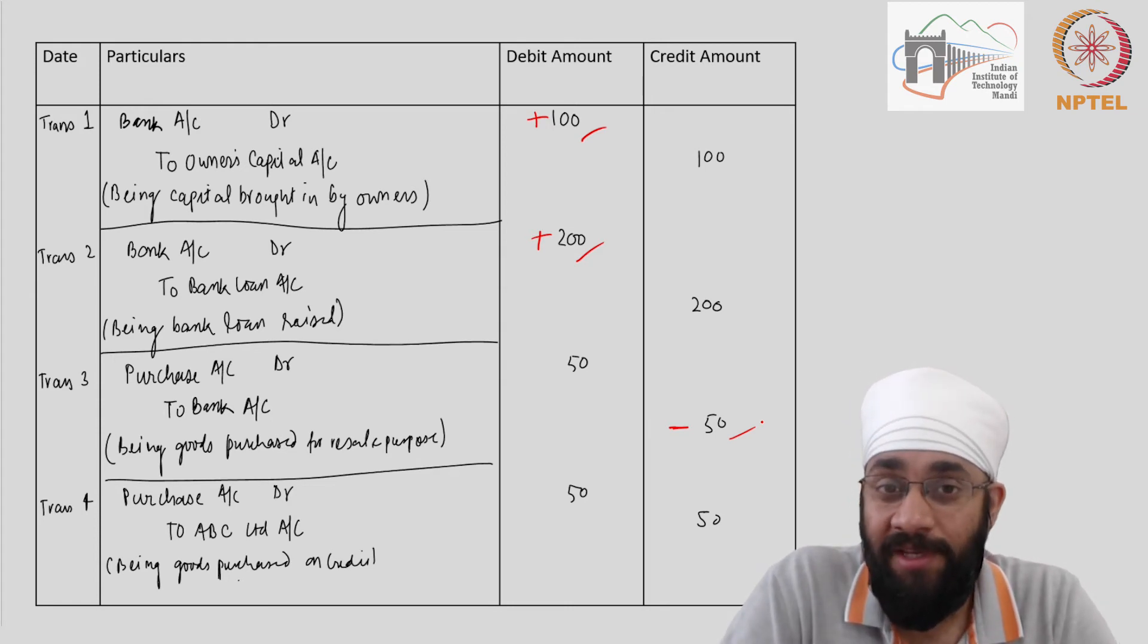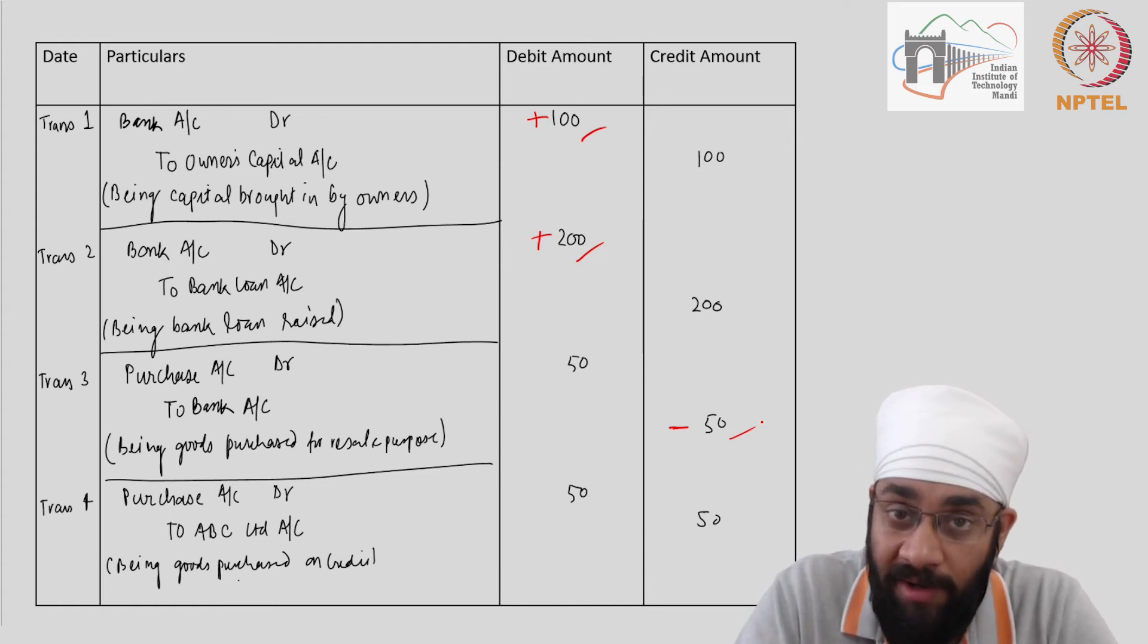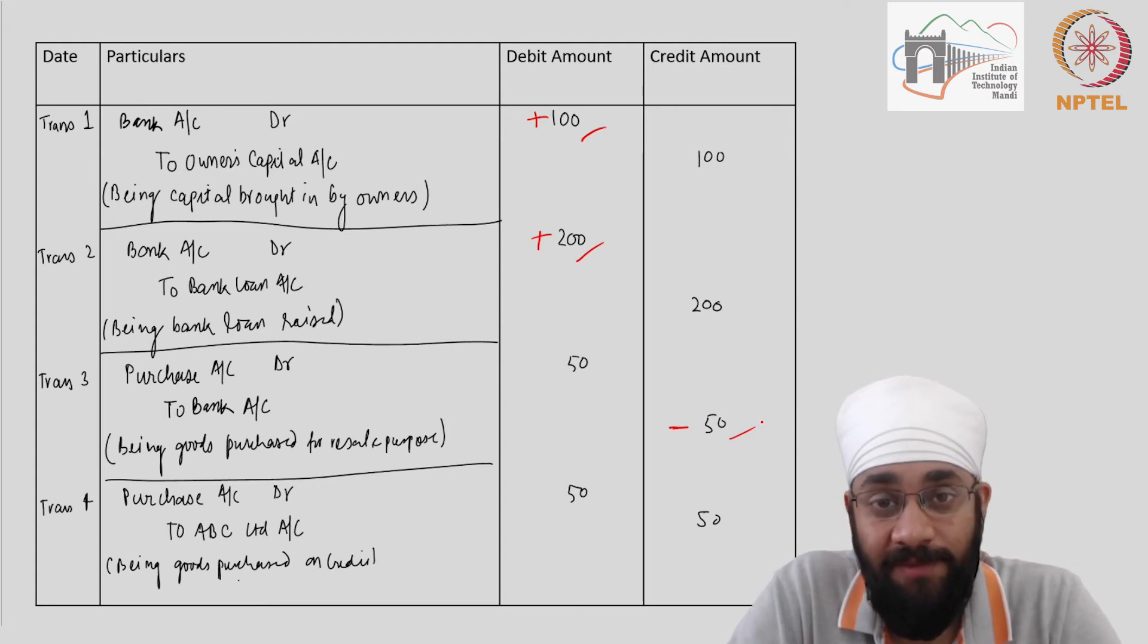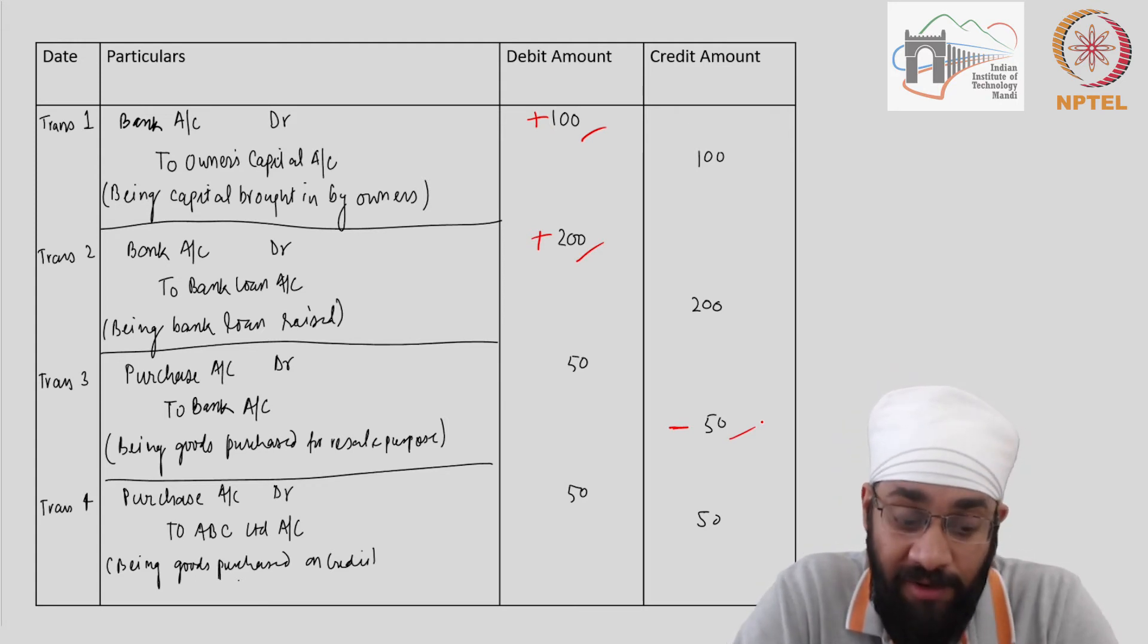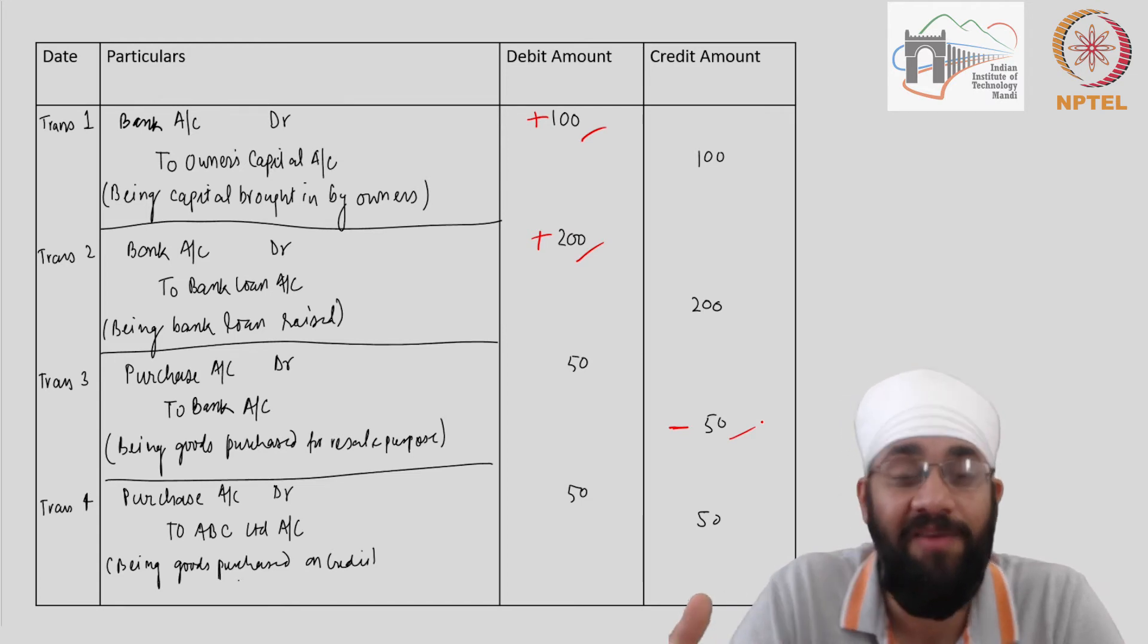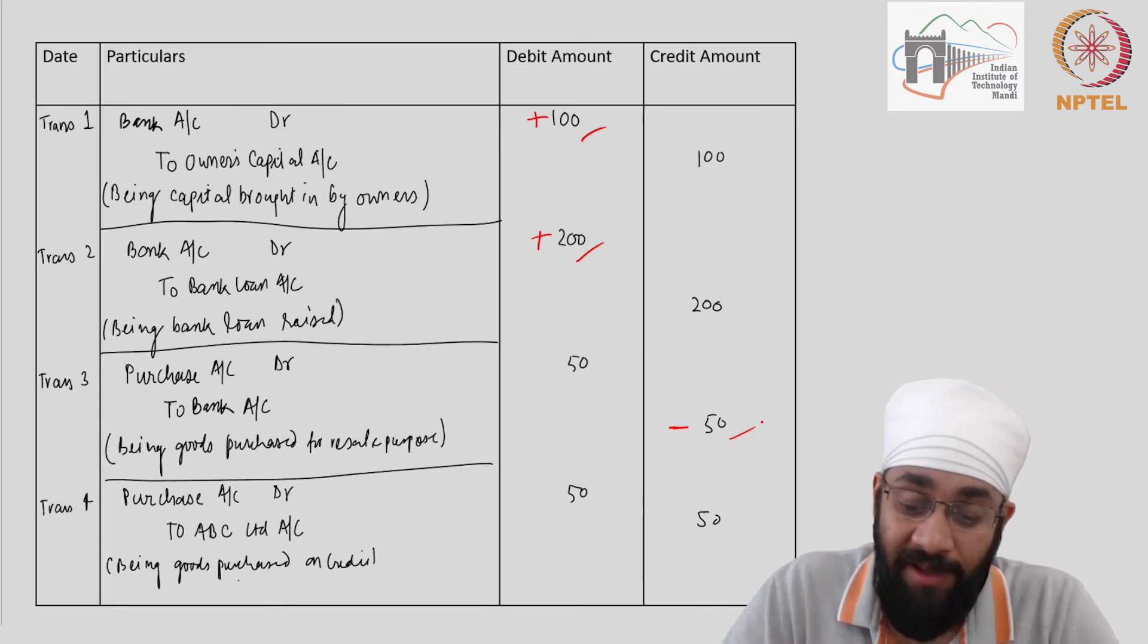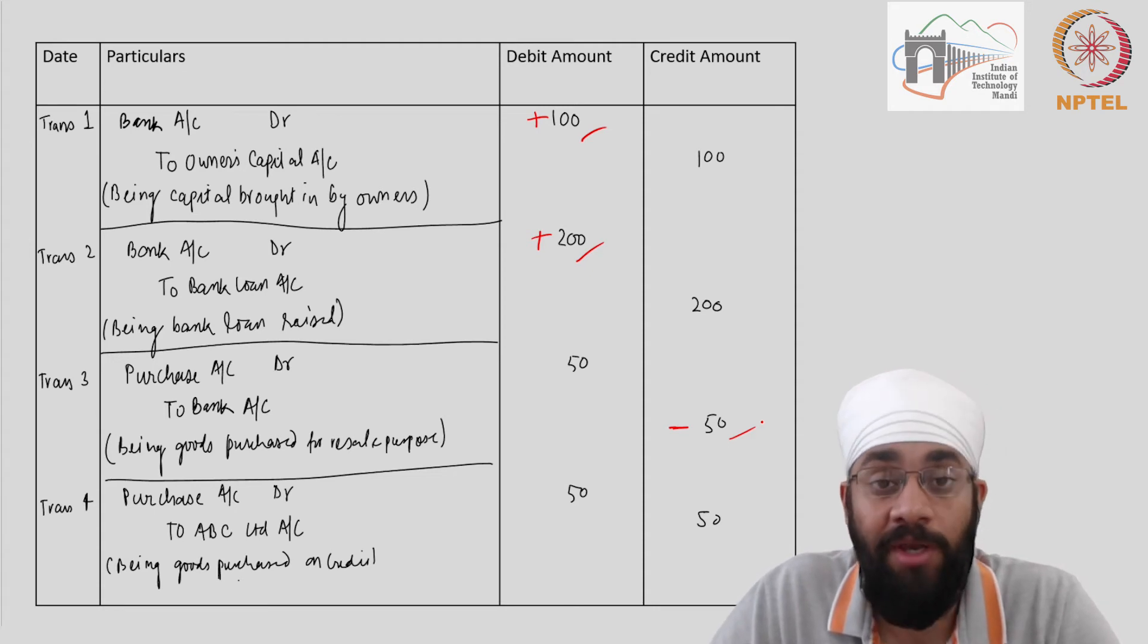In an actual business depending upon what size of business you are running, how much geographically spread you are in terms of business, the transactions could run into thousands and transactions could run into thousands per hour as well. So under those circumstances how are you going to manually do this?